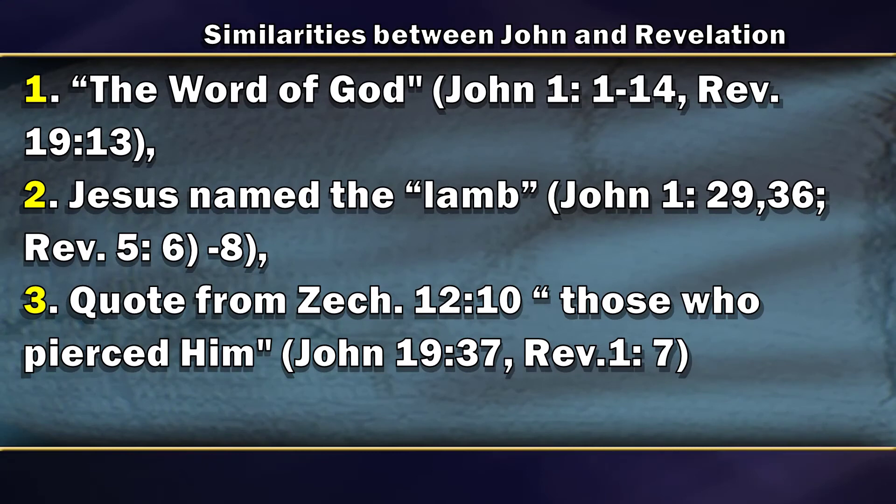Number two: Jesus is named the Lamb in both books. The Gospel of John as well as Revelation both name Jesus the Lamb of God, although in Revelation a diminutive for the word Lamb is used. Number three: the quote from Zechariah 12:10, 'those who pierced him,' is only recorded in the Gospel of John and Revelation. No other book in the New Testament mentions that quote from Zechariah 12:10.